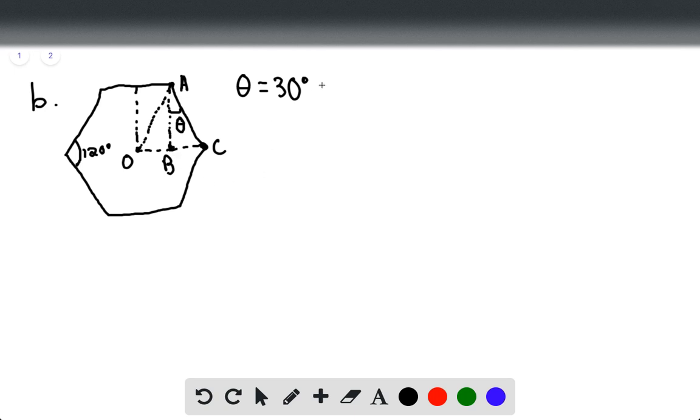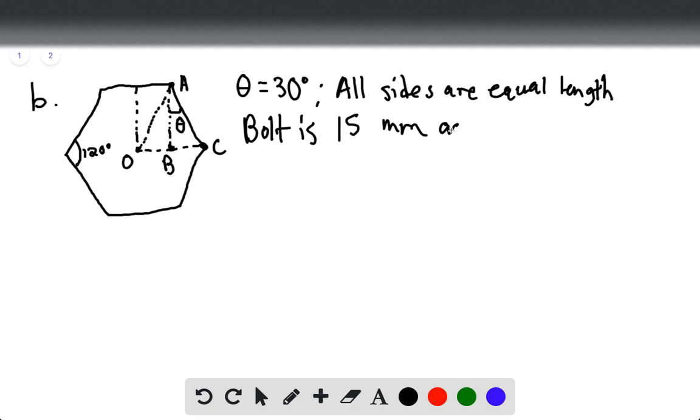Now, all sides are equal length, so that's really important. And a bolt, the actual bolt is 15 millimeters across. So we can automatically say that AB, this line from A to B here, is going to equal 7.5 millimeters, or 0.0075 meters.